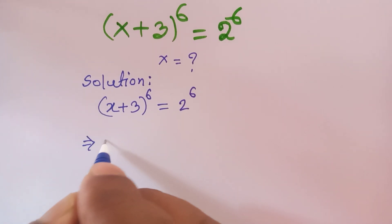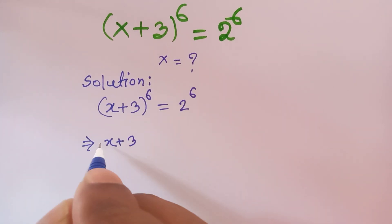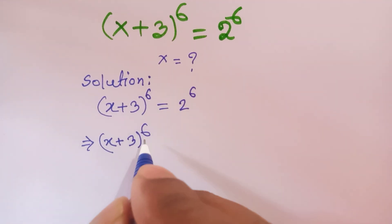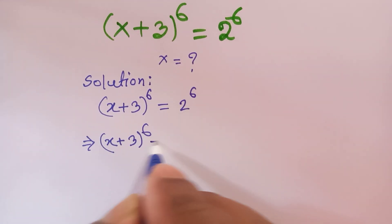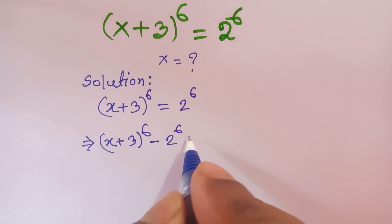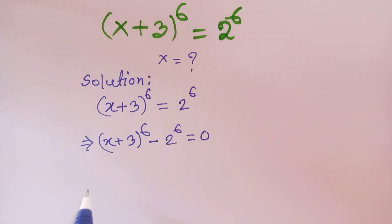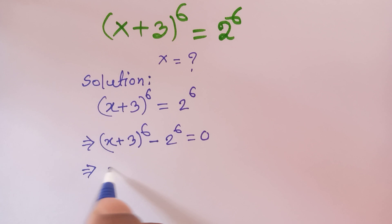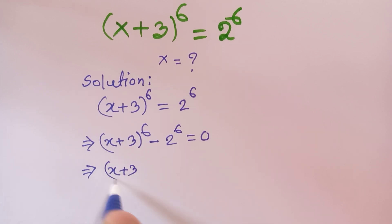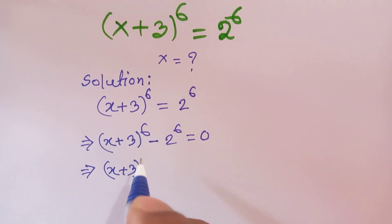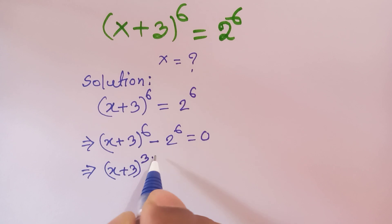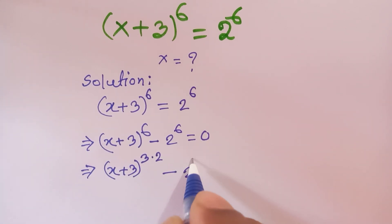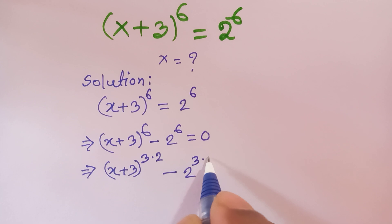First, we move 2 to the power 6 to the left side, so it becomes x plus 3 raised to the power 6 minus 2 to the power 6 is equal to 0. Next, x plus 3 raised to the power 6 can be written as 3 times 2, and 2 to the power 3 times 2, giving us the power of 6.